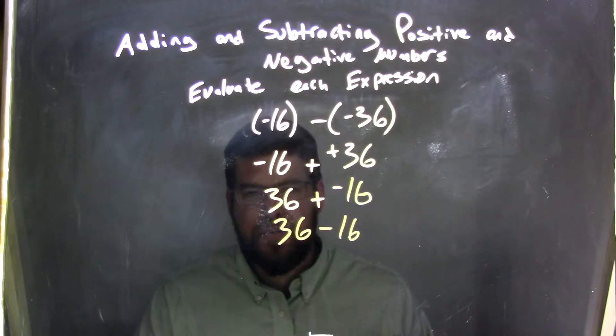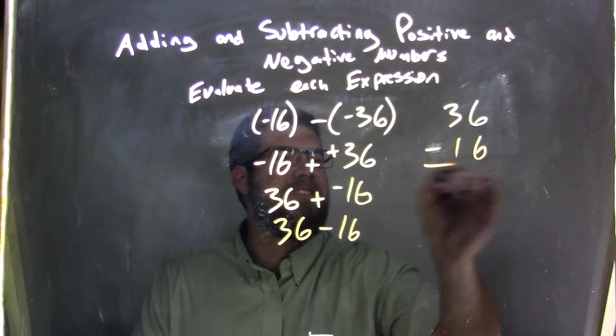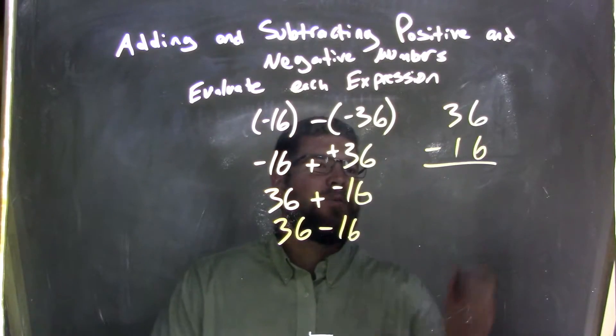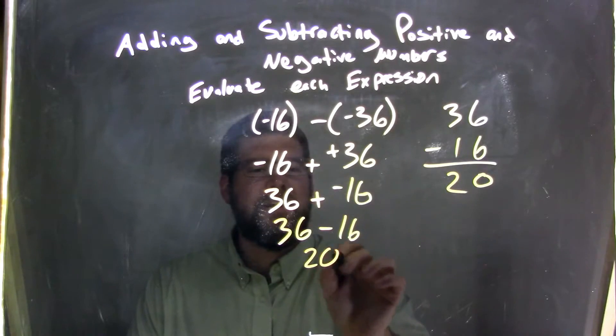Well, 36 minus 16. Let's do it here. 36 minus 16, right? Well, that's an easy one. 6 minus 6 is 0, and 3 minus 1 is 2, and 20 is my final answer.